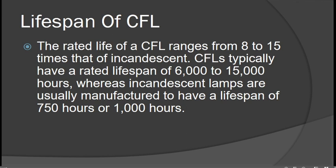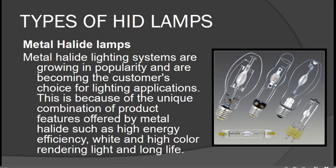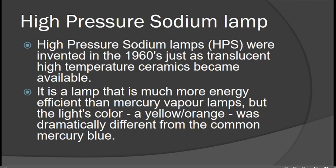High Intensity Discharge (HID) lamps produce lighting by means of an electric arc between tungsten electrodes housed inside a translucent or transparent fused quartz or fused alumina arc tube. Types of HID lamps include metal halide lamps, which are growing in popularity due to their high energy efficiency, high color rendering, and long life.